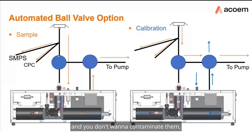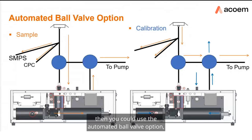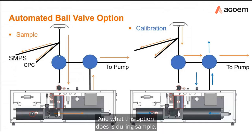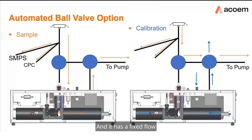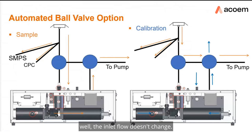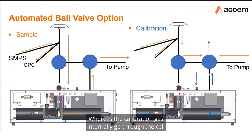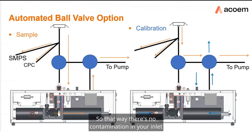If you don't want to contaminate other instruments sharing a common inlet, you can use the automated ball valve option. During sampling, this allows the sample to flow through the cell and vent out the exhaust using an external pump at a fixed flow of 4.5 liters per minute. During calibration, the inlet flow is bypassed out to the exhaust pump while calibration gas internally flows through the cell and vents out the other ball valve, preventing any contamination of the shared inlet.